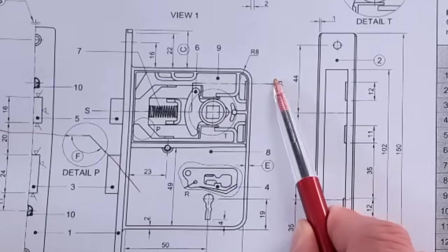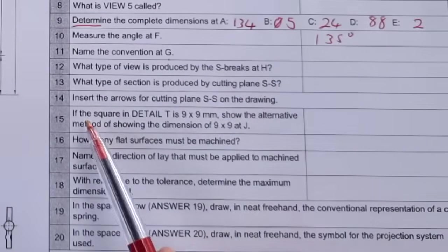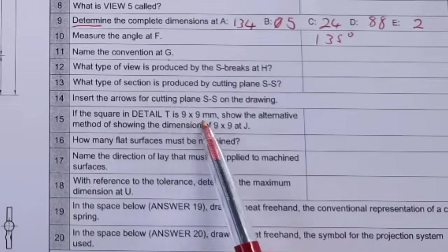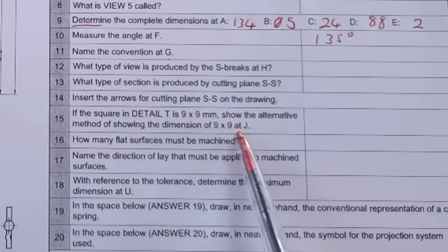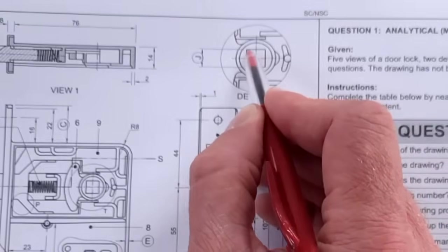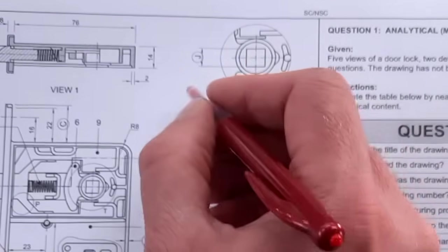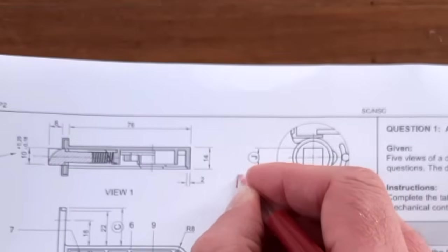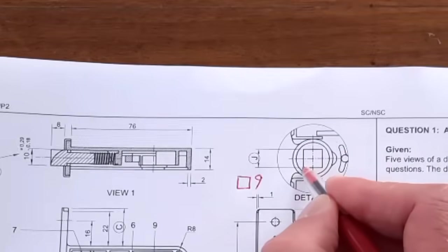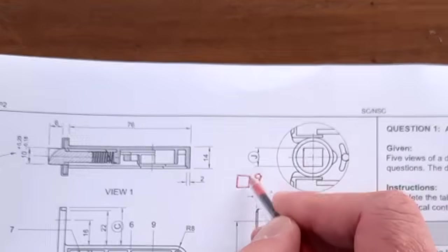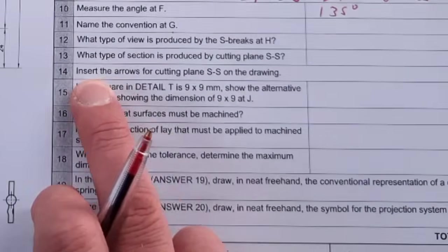And then in the square in detail T is 9 by 9. So the alternative method of showing the dimension 9, 9 at J - so this is right here, up there. So J can be 9 by 9, and the way of indicating that is actually because that's a square, you can go square and then a 9. That's another way of indicating 9 by 9 by actually doing that symbol. So that symbol there could just have looked like that. Insert the arrows for cutting plane SS. So you see here there's no cutting plane. Which side do we have the arrows? Look - you see the actual section in top here. So if I look from the top, my arrows need to be also from the top. And you're going to have to do these arrows on the actual drawing to have your top view section, top view.